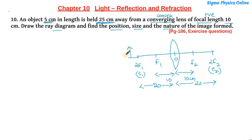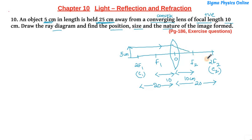The object is at 25 centimeter with a height of 5 centimeter. We have to find the position, size, and nature of the image. Before we begin, we can predict the kind of image that will be formed — whether real or virtual — and its size. One ray goes parallel to the principal axis and after refraction passes through focal point f2. Another ray passes through the optical center, and they meet to form the image.